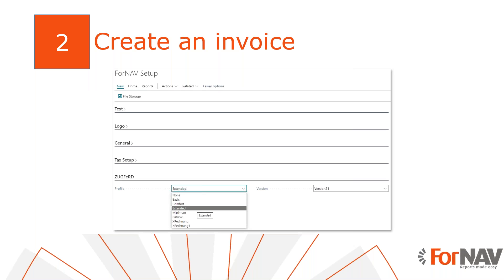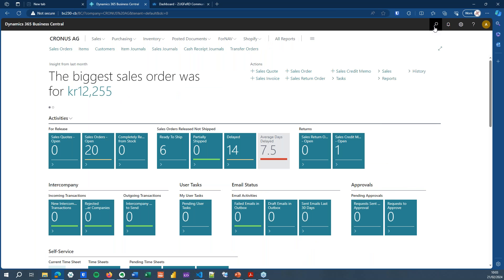The first thing we will do is create a ZUGFeRD compliant invoice. All we need to do is install the ForNav ZUGFeRD extension and select the profile for ZUGFeRD invoices on the ForNav setup page. When you have chosen the profile, all ForNav reports using the posted invoice or credit memo table and the Business Central standard invoice or credit memo table will automatically be modified into ZUGFeRD compliant documents. This means the output is converted to PDF/A-3 format and the electronic documents are embedded in the PDF. If you select none as the profile, the ZUGFeRD feature is turned off and the output is not modified.